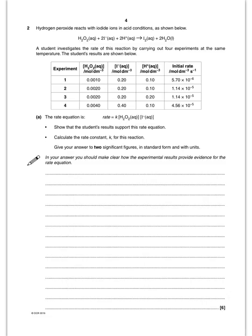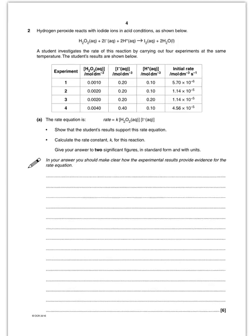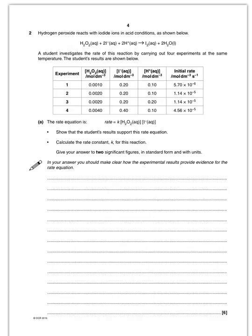They've given the rate equation and want me to prove it is correct. First, let's look at hydrogen peroxide — logically using experiments one and two. From one and two I double the concentration of peroxide while iodide and H+ stay the same. If I double the hydrogen peroxide I double the initial rate, and therefore it is first order with respect to hydrogen peroxide.